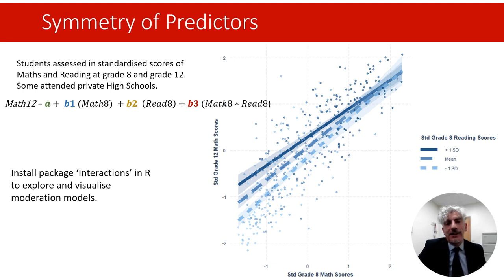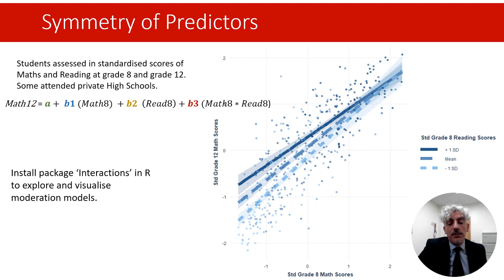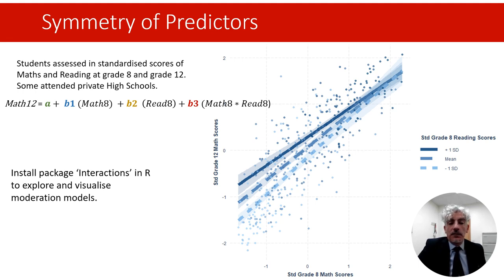There is nothing in the equation that designates grade 8 reading scores as the moderator rather than the predictor. The interpretation of a construct as a moderator does not come from the model or analysis — it comes from designing studies that support this causal interpretation and from our substantive knowledge about the issues. The point is that statistical models cannot tell us everything we need to know, and correct interpretation requires further reflection and information from different sources.